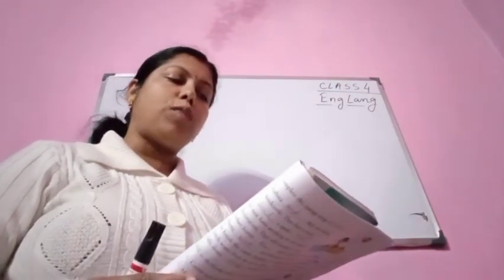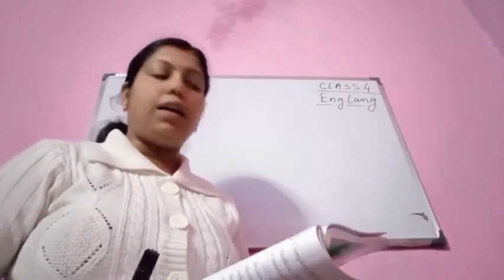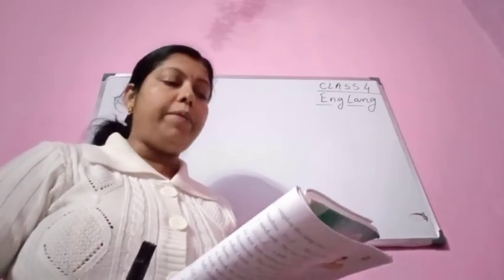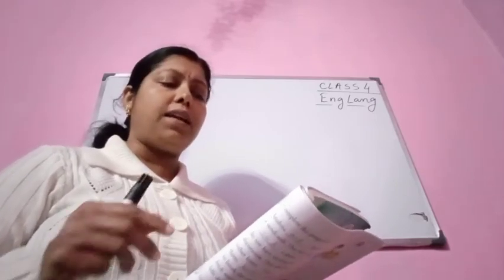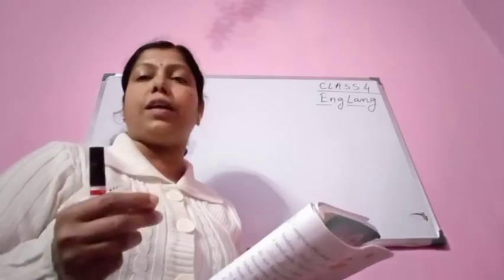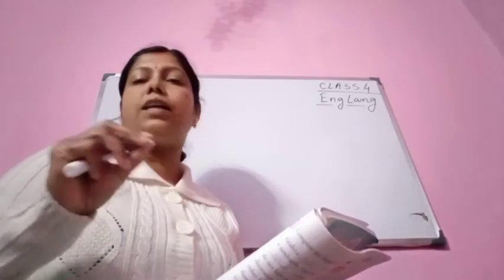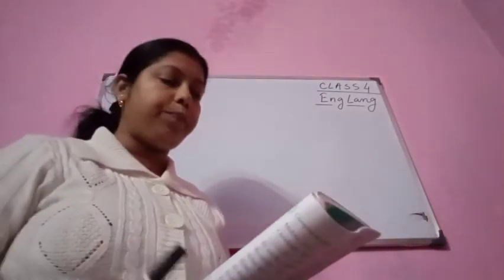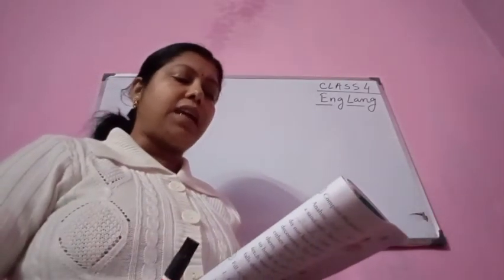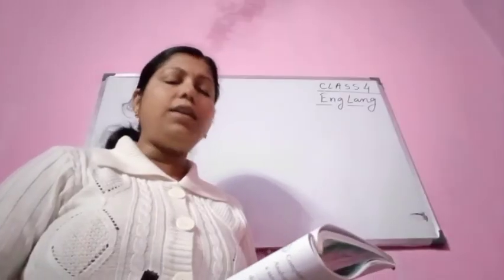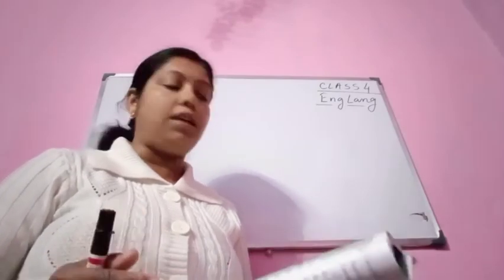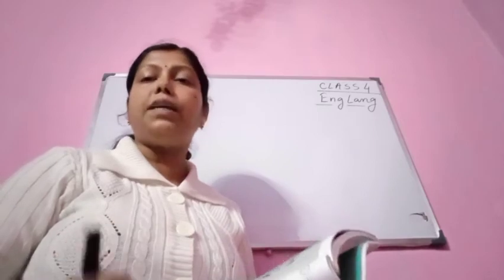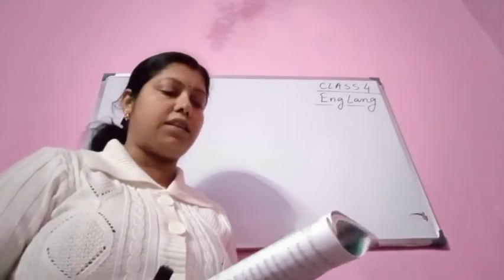Abneet and Swati study in the same class. This sentence makes sense - Abneet and Swati, both these children study in the same class. Is it Sunday and Monday today? This does not make any sense. If you say 'Is it Sunday or Monday today?' then it would make sense.